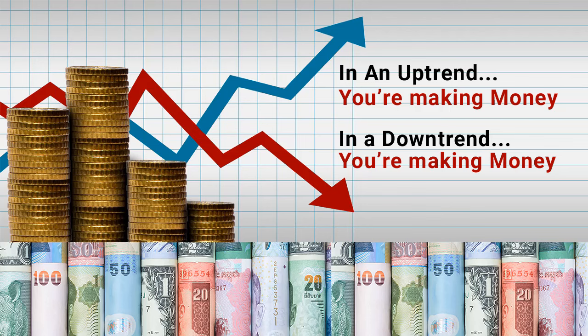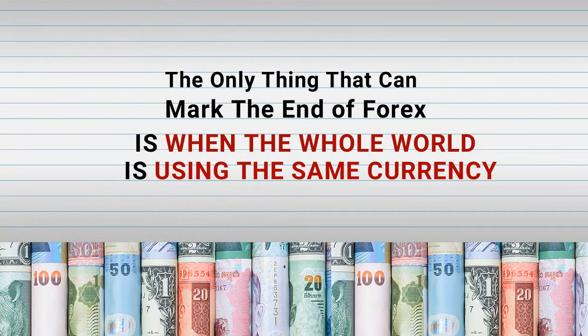Did you understand the bureau de change example? You saw the naira was going to fall, you quickly bought dollars; when it fell, you bought naira again. You discovered the dollar was going to fall, you bought naira, kept it; then the dollar fell and you bought dollar again — so the ups and downs both make you profit. The only thing that can make forex trading cease to exist is if the whole world decides to use only one currency. That's when the forex market will be completely terminated.